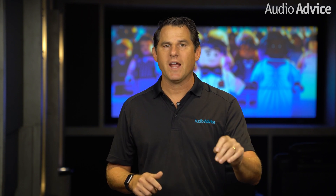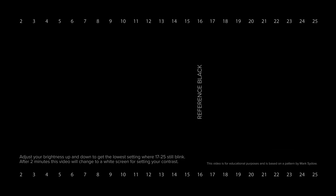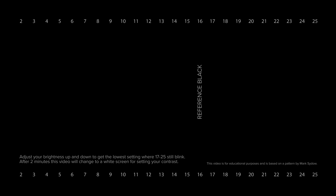First, take a picture of your settings before changing them so you can revert back later if you want. Now, turn off the lights in the room so it's dark as if you're watching a movie. The first thing I'm going to do is show you a black test pattern. This test pattern has different levels of black and is designed to help you match the black on your display to what the filmmaker set as reference black in their content.